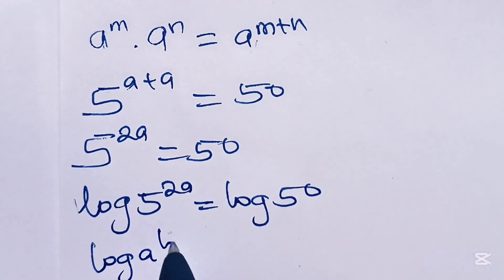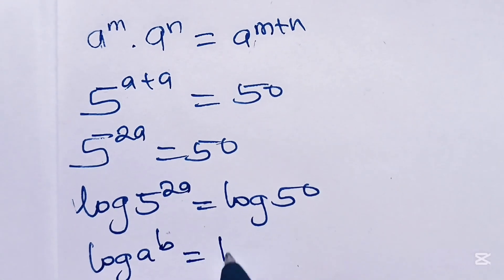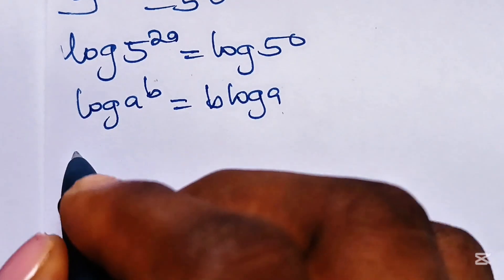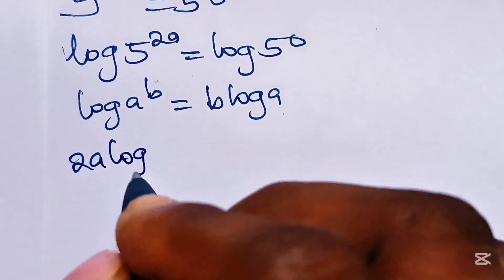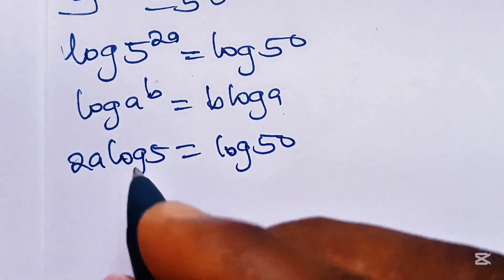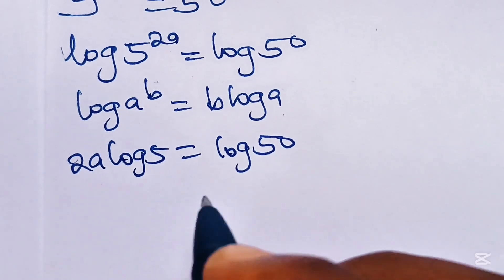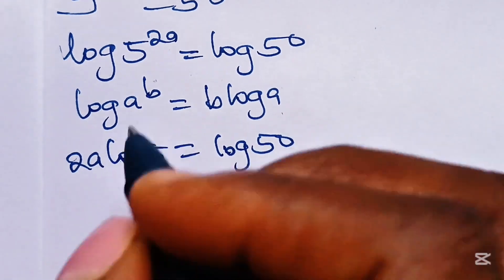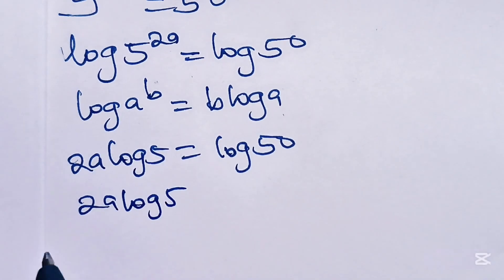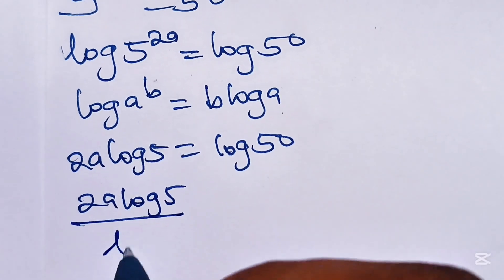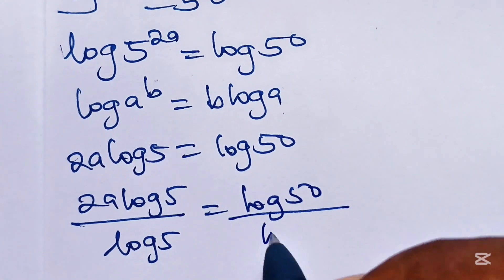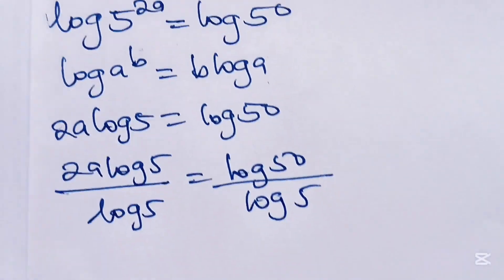So we have log of 5 to the power of 2a is equal to log 15. Now when you have log of a raised to the power of b, this is equal to b multiplied by log a. Therefore we write 2a log 5 is equal to log 15. We are going to divide both sides by log 5, giving us 2a equals log 15 divided by log 5.